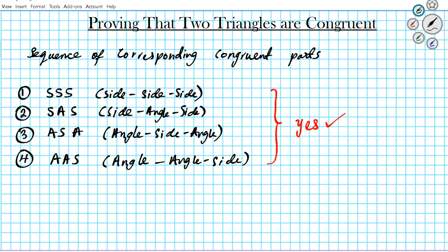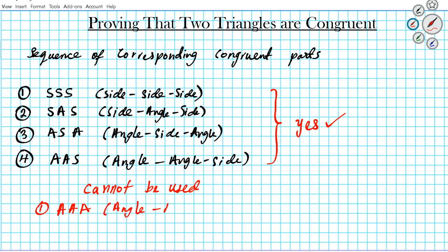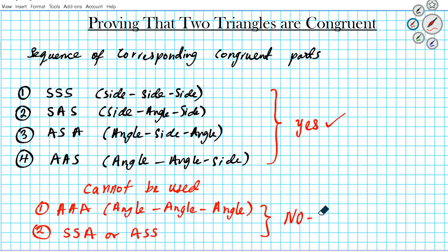These are the valid ones — the yeses. Now there are two sequences of corresponding congruent parts that cannot be used — do not try to prove congruency with these. You cannot use AAA: angle, angle, angle is not a valid way to show that two triangles are congruent. And number two is SSA, which can appear as side, side, angle or angle, side, side — these are a no-no. You can only use SSS, SAS, ASA, and AAS.